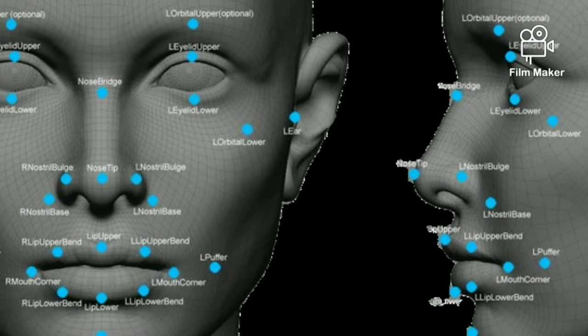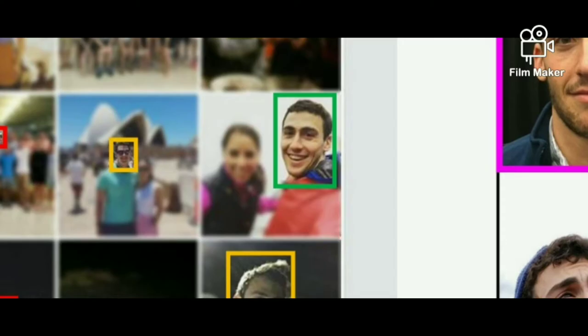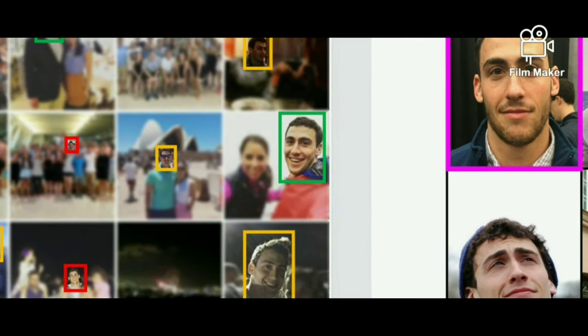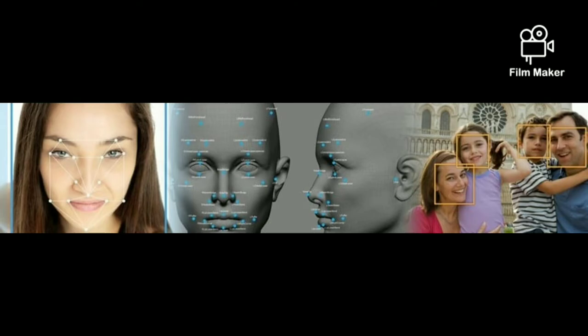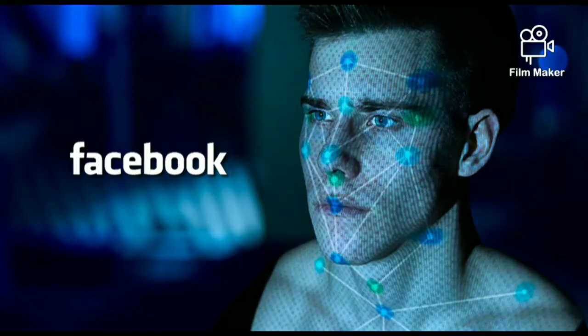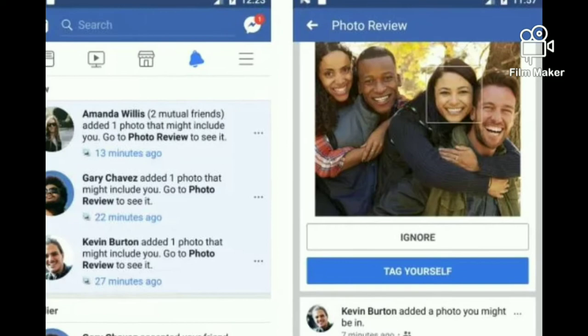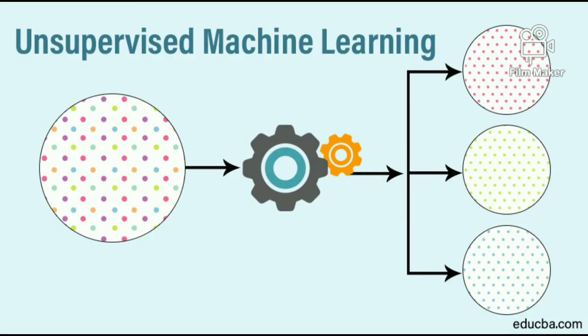If you use Facebook, most likely your face has been used in a supervised learning algorithm trained to recognize your face. A system that takes a photo, finds faces, and guesses who that is in the photo — suggesting a tag — is a supervised process. It has multiple layers: finding faces and then identifying them, but it is still supervised nonetheless.